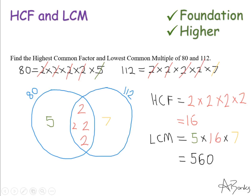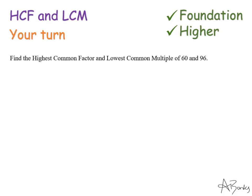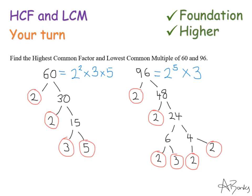That's the complete solution. Here's a question for you to try: find the highest common factor and lowest common multiple of 60 and 96. You'll need to do the prime factor decomposition yourself first, then use that to draw a Venn diagram and find your solutions. The full worked solution is on the next page, so pause the video now and then I'll show you the solution.